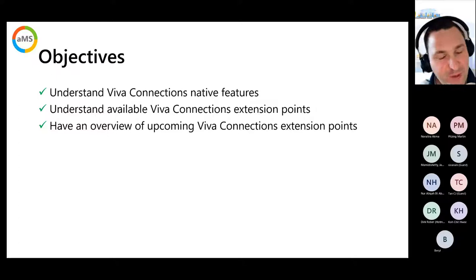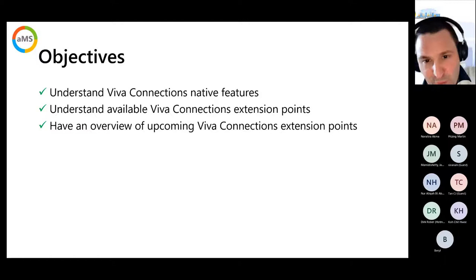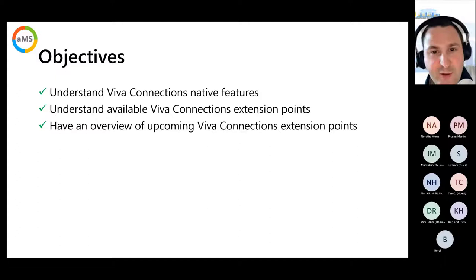For today we have three objectives. First, to understand the Viva Connections native features — the basic features you get out of the box. Second, to understand the available extension points which are in GA. Finally, we'll go through the public preview features running now, including SharePoint Framework dashboard, feed, and related stuff. This is a really demo-focused session.